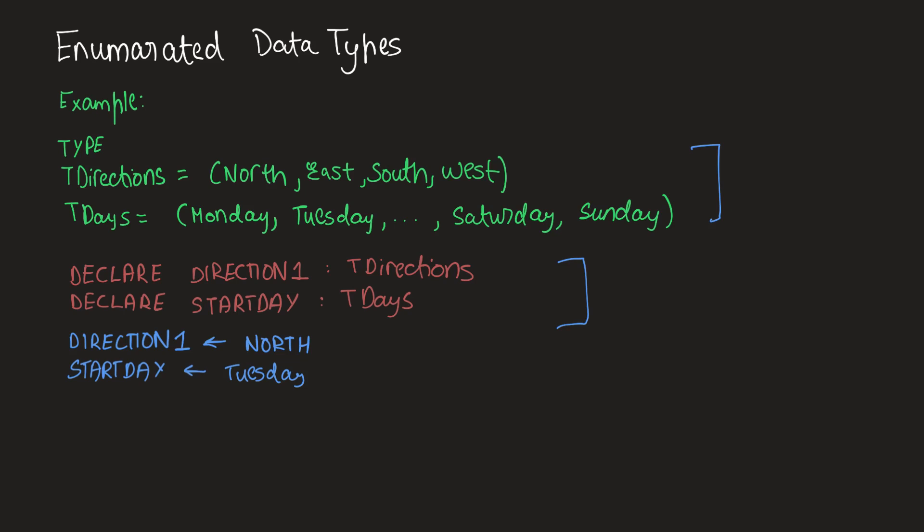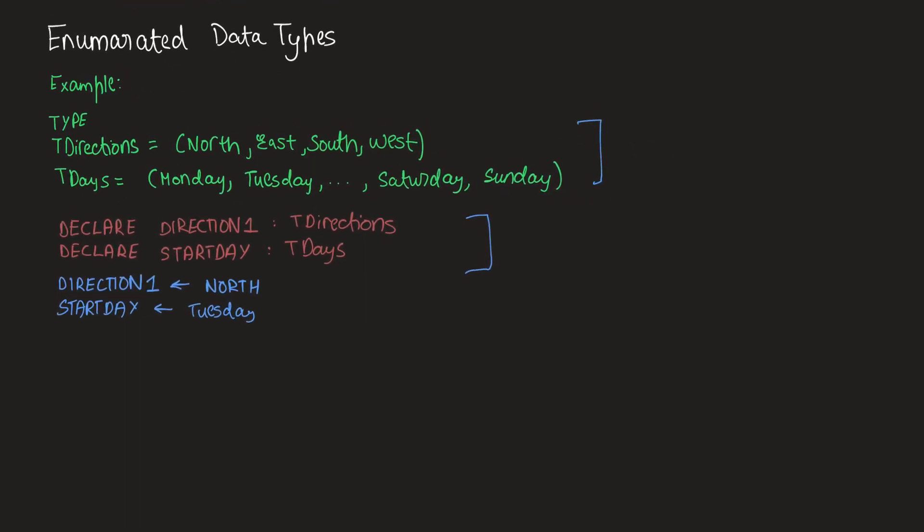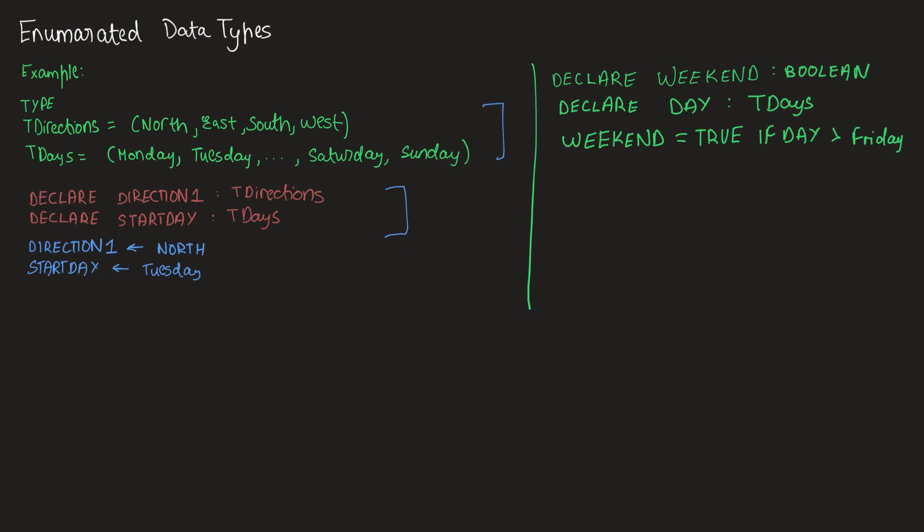Now let's continue with the same example and take advantage of the fact that the values are ordinal and can be compared, not just string values. The code declares weekend as boolean and day as T-days. Weekend is true if day is more than Friday. So if the value of day is anything more than Friday — which in this case is Saturday and Sunday — the value of weekend will be true, which is correct because weekends are Saturdays and Sundays.